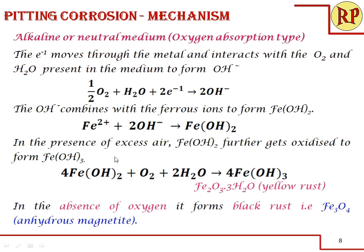In the presence of excess air, ferrous hydroxide gets further oxidized to form ferric hydroxide, Fe(OH)₃ — which is yellow rust, Fe₂O₃·3H₂O, which is very common. In case there is no air in the environment, it forms black rust, also known as anhydrous magnetite, Fe₃O₄.